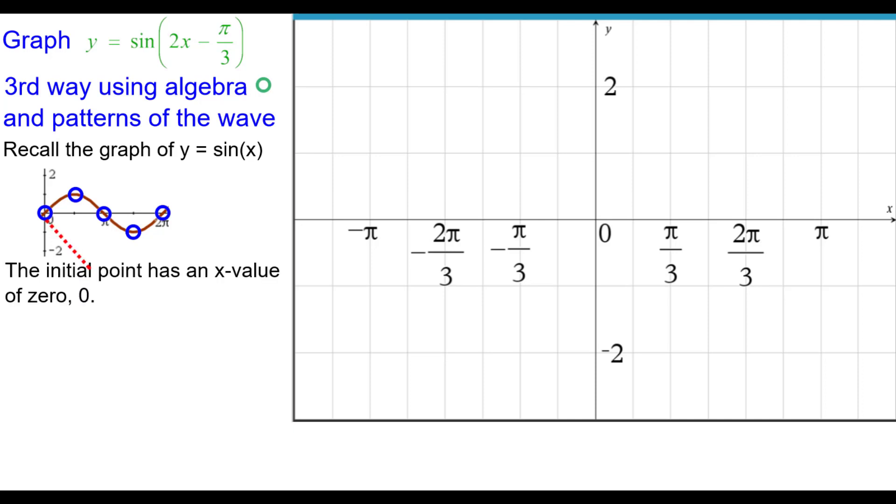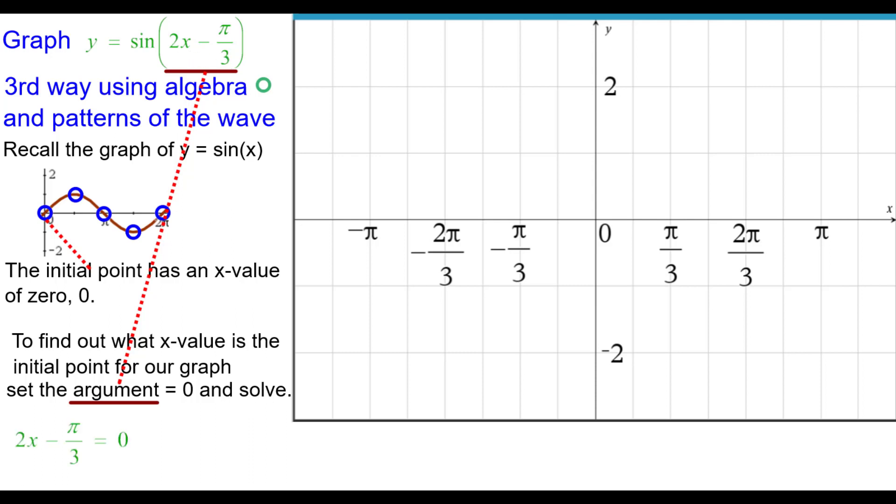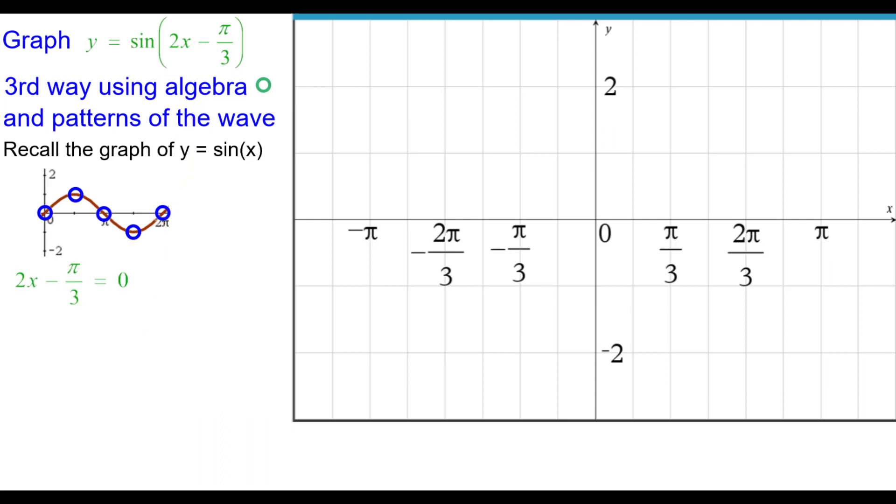Again, recall the graph of the sine function and the 5 points of interest. The initial point has an x value of 0. To find out what x value is the initial point for our graph, we're going to take the argument and set it equal to 0 and solve for x. We want to know when this is 0. So 2x minus pi over 3, we set that equal to 0. Several ways to solve it. I prefer to multiply both sides by 3 to clear out any fractions. And then I prefer to add pi to both sides. And divide both sides by 6. So my initial x value is at pi over 6, 0. And I'll plot that right here. So this point maps to this one.